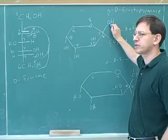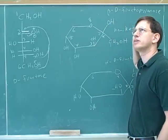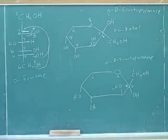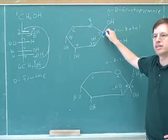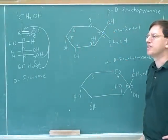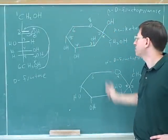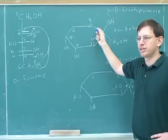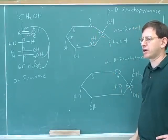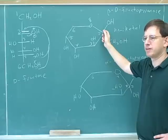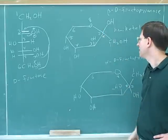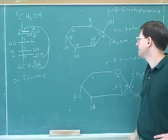This is very important to realize. This is what's called the anomeric carbon. Now the anomeric carbon is the most reactive carbon in the sugar. It's more reactive than any of the other carbons and we'll see why. This is the former carbonyl carbon. The anomeric carbon is the former carbonyl carbon. It's the one that has the two different forms, alpha and beta.